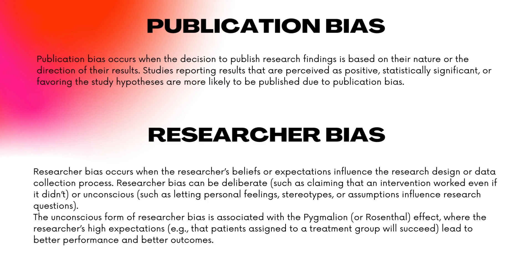Publication Bias occurs when the decision to publish research findings is based on their nature or the direction of their results. Studies reporting results that are perceived as positive, statistically significant, or favoring the study hypotheses are more likely to be published. Publication Bias is related to data dredging, also called p-hacking, where statistical tests on a set of data are run until something statistically significant happens. P-hacking can also involve excluding participants or stopping data collection once a p-value of 0.05 is reached, leading to false positive results and an over-representation of positive results in published academic literature.